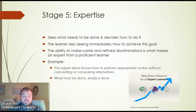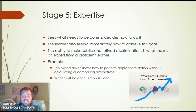Stage five is expertise. The expert sees what needs to be done and decides how to do it immediately. The ability to make subtle and refined discriminations is what distinguishes an expert from a proficient learner. For the driver example, the expert driver performs the appropriate action without calculating or comparing alternatives — what simply must be done is done, without any significant thought process required.